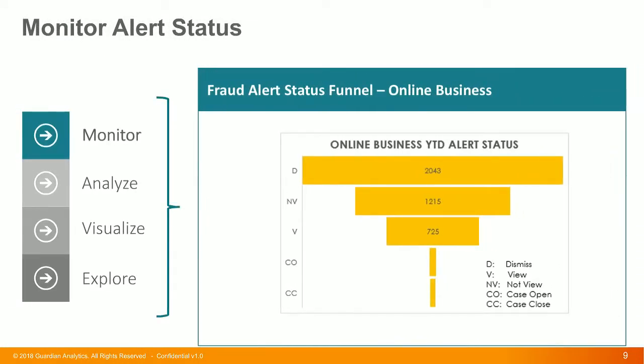The first step of any analytics and BI exercise is monitoring. In this case, we're going to monitor alert statuses. This is a funnel chart — typically found in sales — being used here for alerts. The key idea is the lifecycle of an alert: an analyst goes through viewing it, dismissing it, not viewing it, opening the case, or closing the case. These are the alert status states within the lifecycle, and it's very important for a fraud manager to understand how the funnel looks.